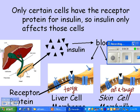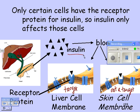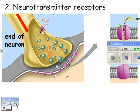Only certain cells have the receptor protein for insulin, so insulin affects only those cells. Lots of receptors are found in the cell membrane. Any time you have a protein hormone, the receptor is going to be on the surface of the cell. If you have a steroid hormone, it could actually go right through the cell membrane, and the receptor can be inside the cell.